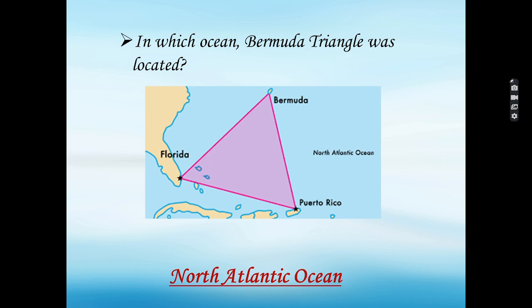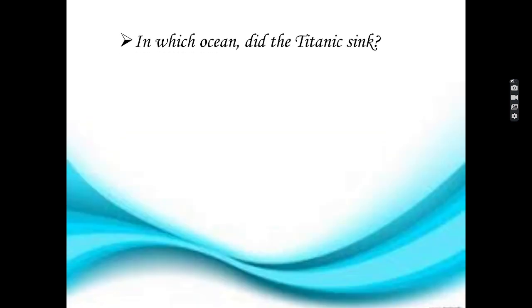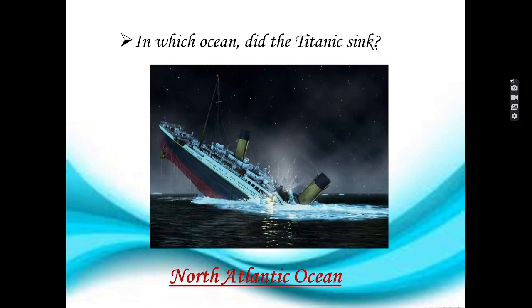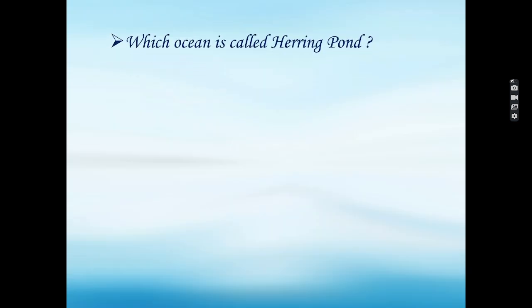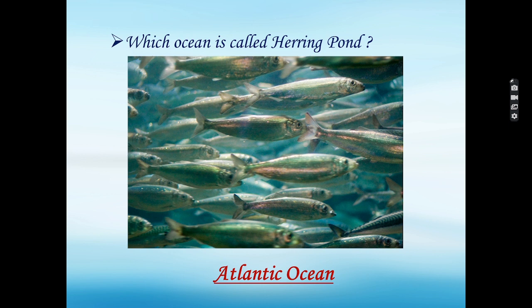You know what is Bermuda Triangle? Bermuda Triangle is also known as the Devil's Triangle, where a number of aircraft and ships are said to have disappeared under mysterious circumstances. In which ocean did the Titanic sink? North Atlantic Ocean. Which ocean is called Herring Pond? Atlantic Ocean is called Herring Pond.